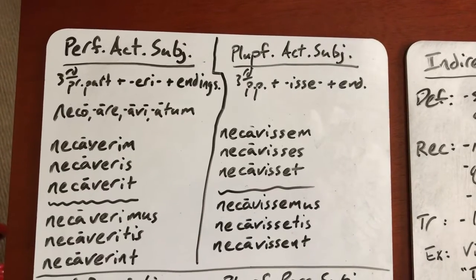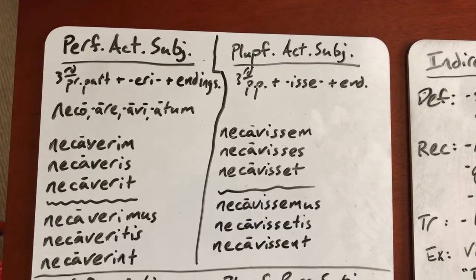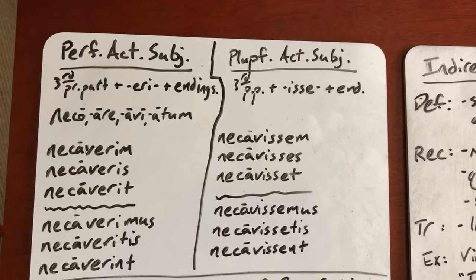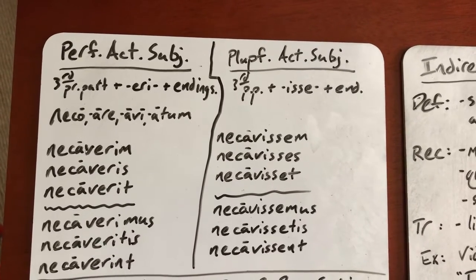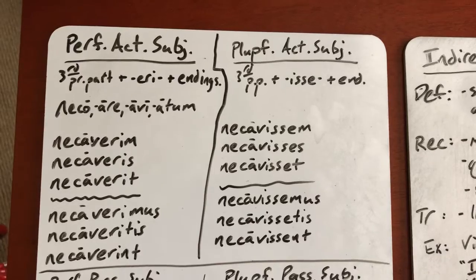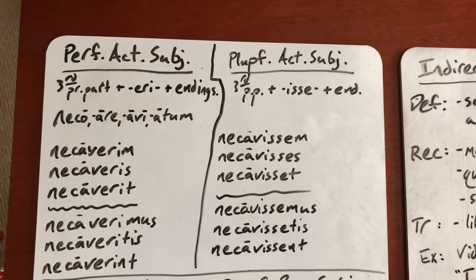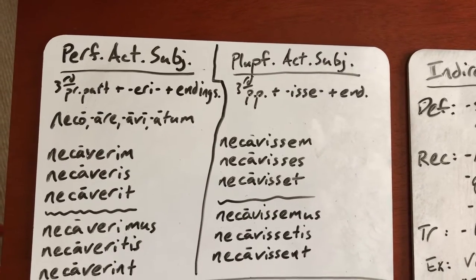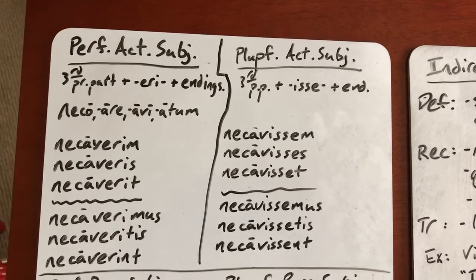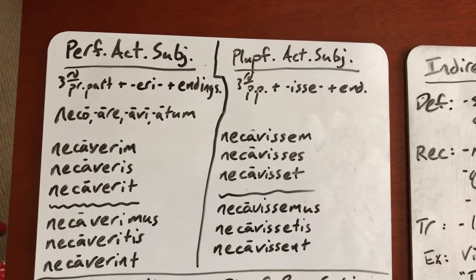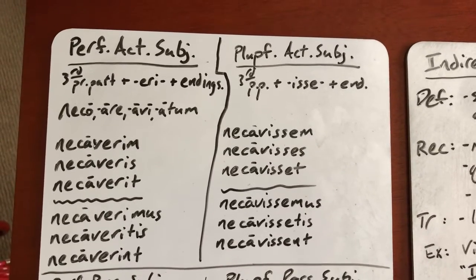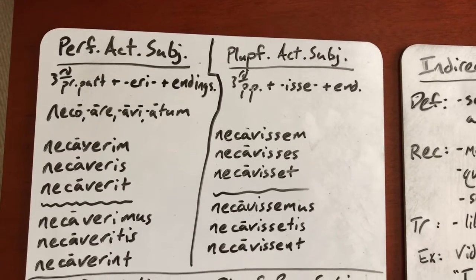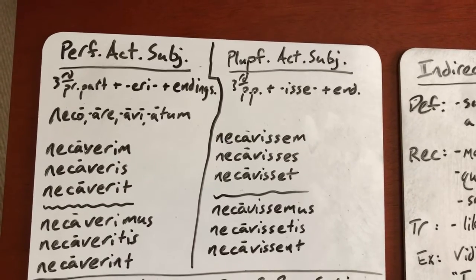For the perfect active subjunctive, what you do is you add E-R-I, and then you add your endings, so you get necaverim, necaveris, necaverit, and so on and so forth. So: third principal part, chop off your I, and then you add the E-R-I, and then your endings.